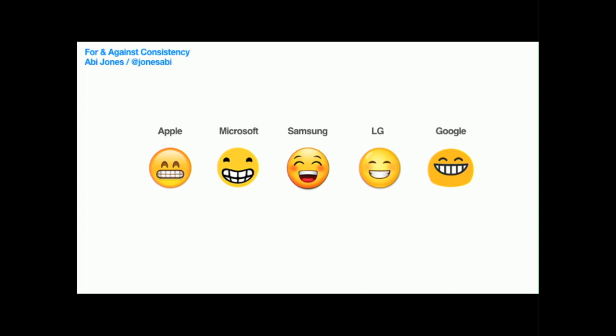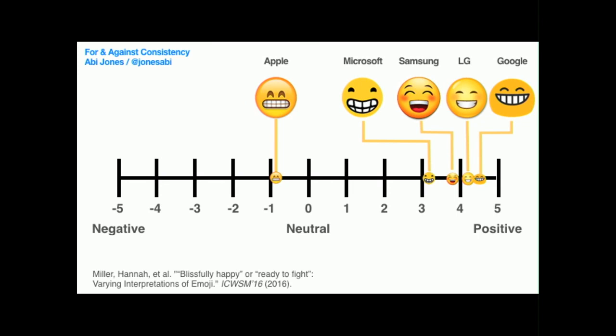It turns out I'm not alone in this. If you look at 1F601 — the grinning face — there's research showing there's high variance in how people interpret this emoji across different platforms. The Apple one has a negative aspect to it, whereas the Google one is super positive. That means if people who have iPhones and Android devices are trying to communicate with each other, they're sending completely different messages — which is horrifying.